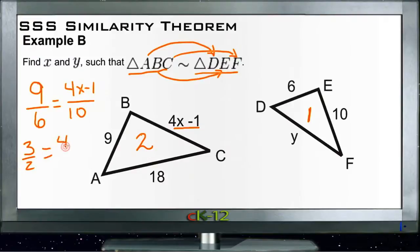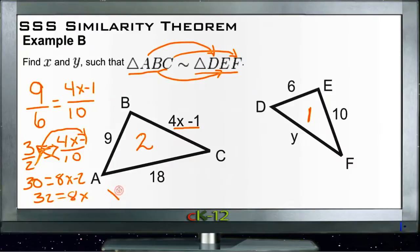3 over 2 is equal to 4x minus 1 over 10. Now we'll cross multiply and we'll get 30 equals 2 times 4x and 2 times negative 1, so we get 8x minus 2. Add the 2 to both sides and we'll get 32 equals 8x, which tells us by dividing both sides by 8 that x equals 4. So if x equals 4, then we have 4 times 4 minus 1, so 16 minus 1 is 15, so side BC must be 15.